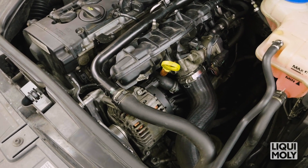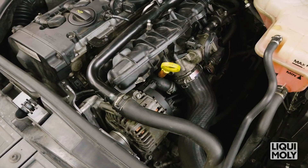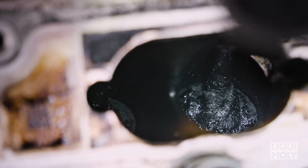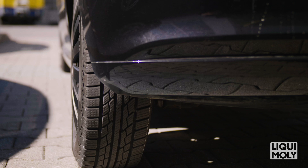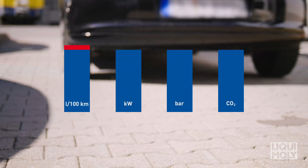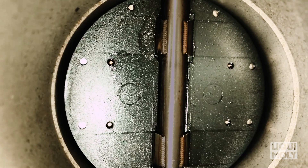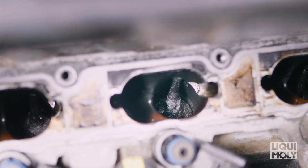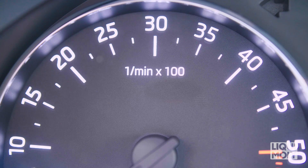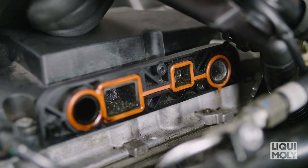Due to contamination caused by exhaust gas recirculation and crankcase ventilation, over time, oil and resin deposits form in the intake area of gasoline engines. This buildup will have a negative effect on fuel consumption, performance, compression and emission values. These deposits building up inside the throttle valve, intake manifold and on intake valves can, over time, lead to expensive failures and costly repairs.